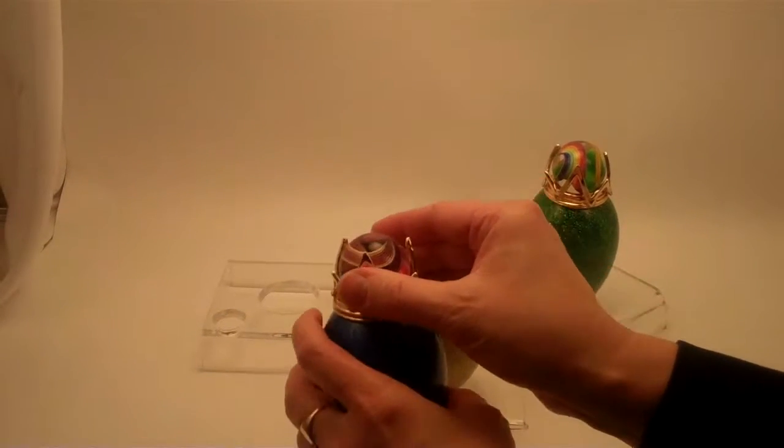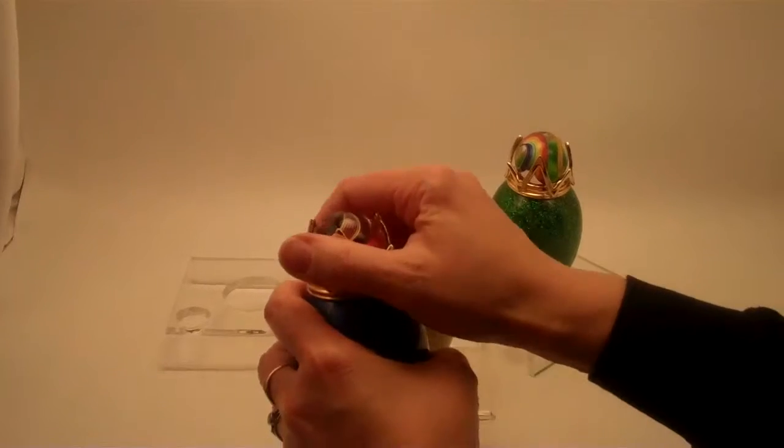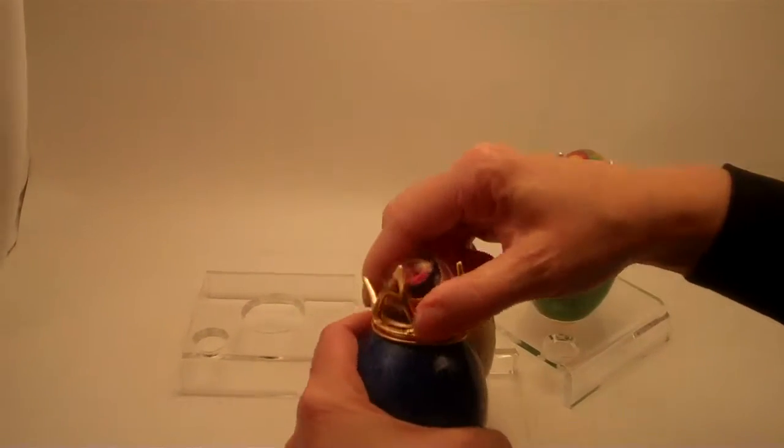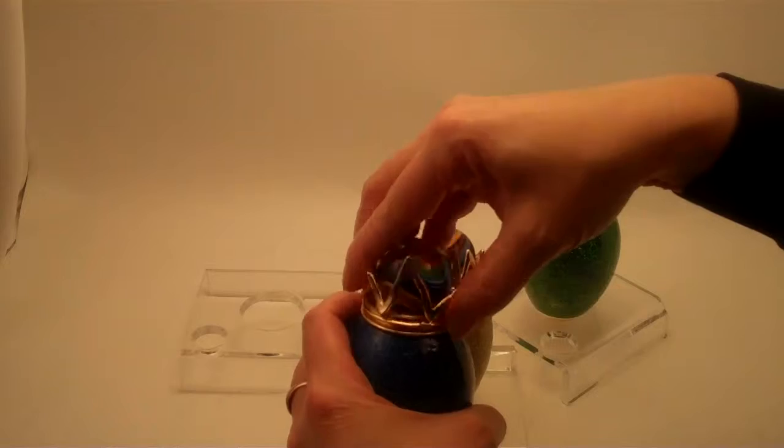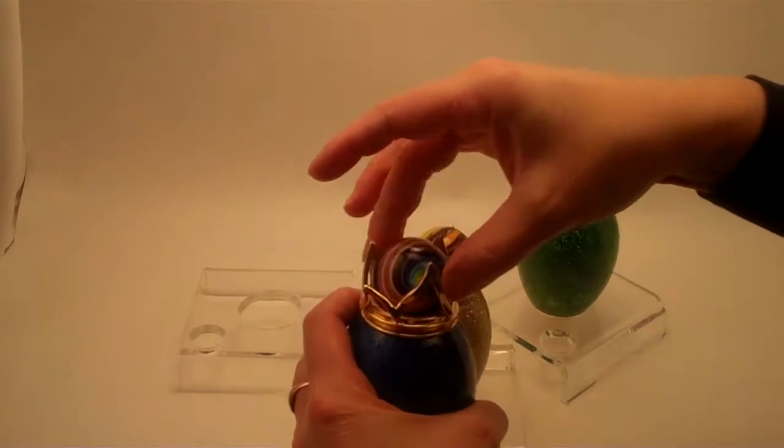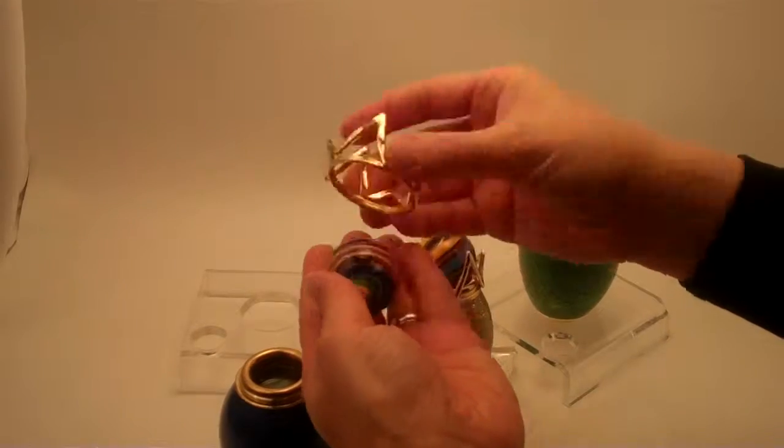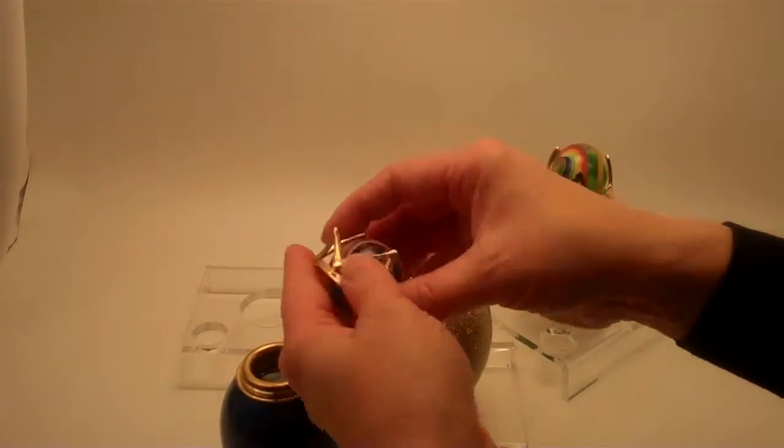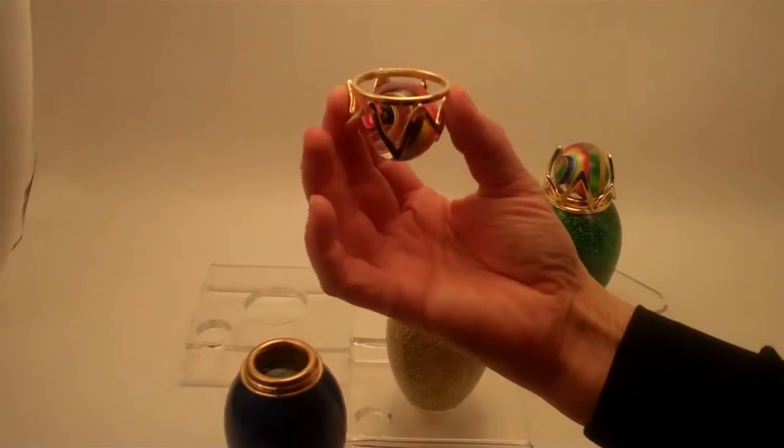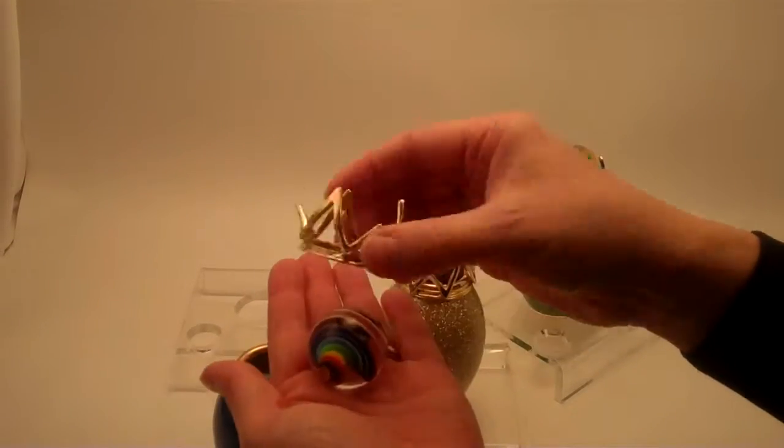These are in an interchangeable cage. You unscrew the top crown, and the marble does not come out the top—it comes from the main portion of the cage and will not fall out the top of the crown either.